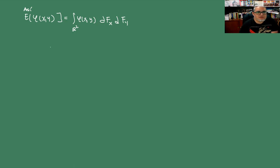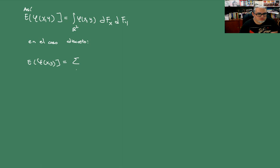En el caso discreto, la esperanza es la suma sobre todas las (x,y) de φ(x,y) por la probabilidad conjunta P(X=x, Y=y).